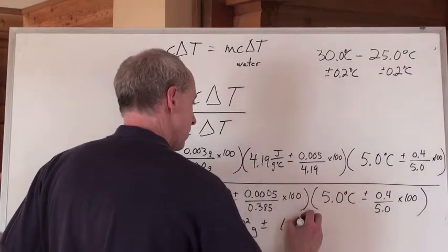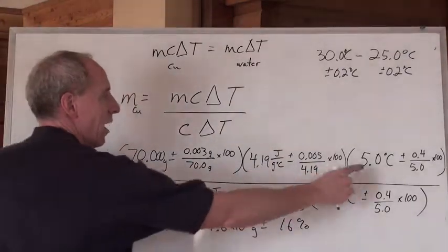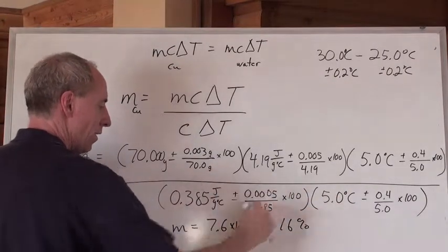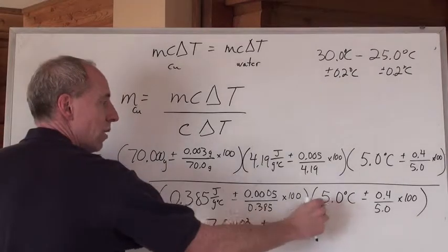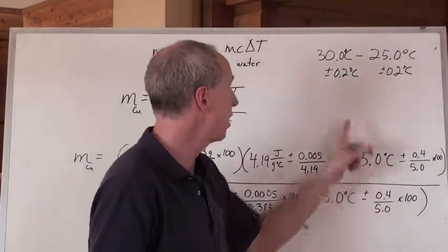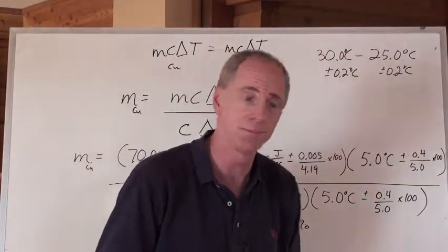By the way, I do the math. This times this times this, divided by this number, divided by this number, and all that equals that right there, to two significant digits, because I had two numbers here that I inputted into the temperature change, but you could have kept three significant digits if you put that change in here and that change in here.